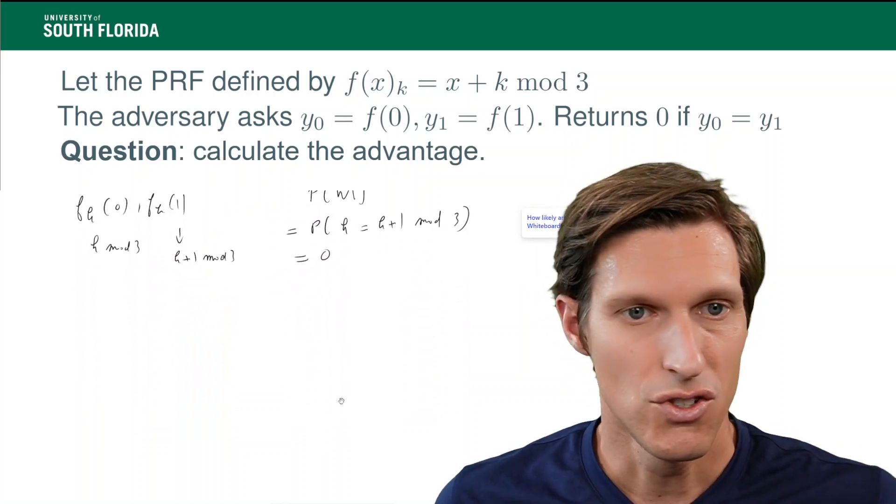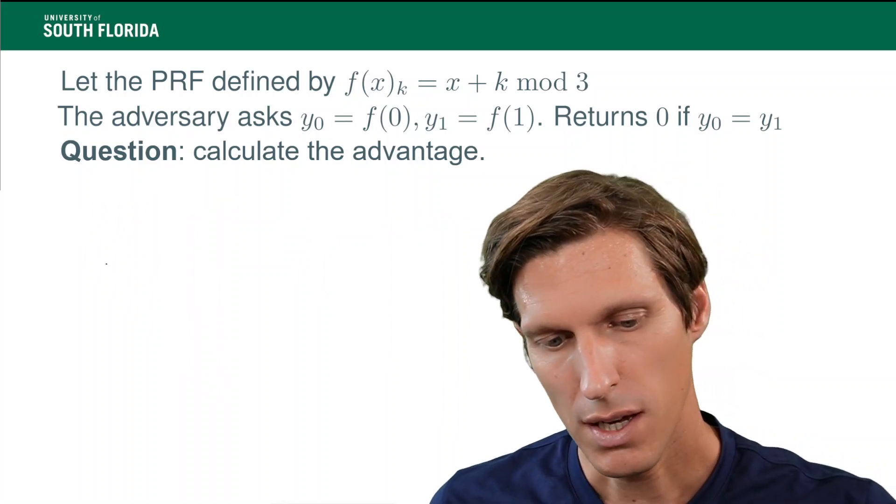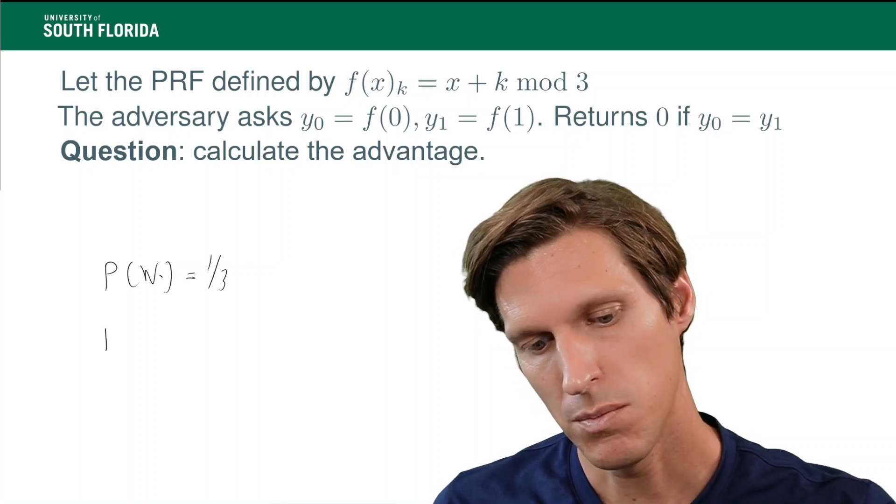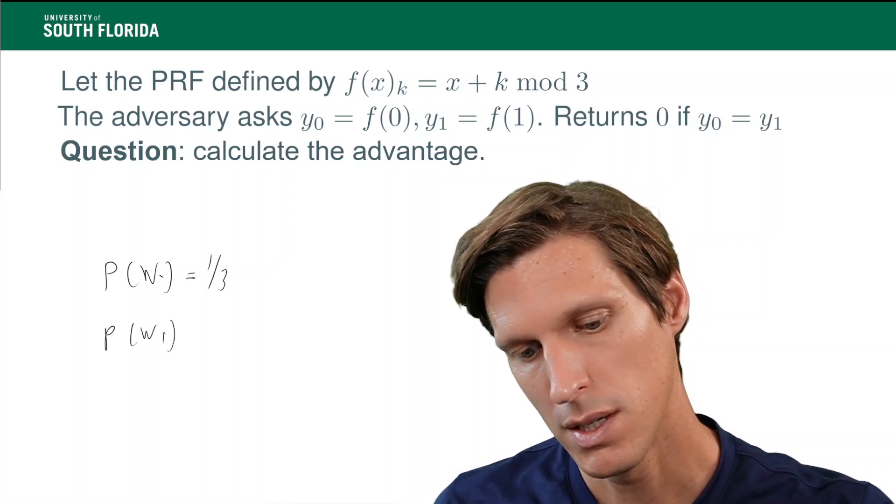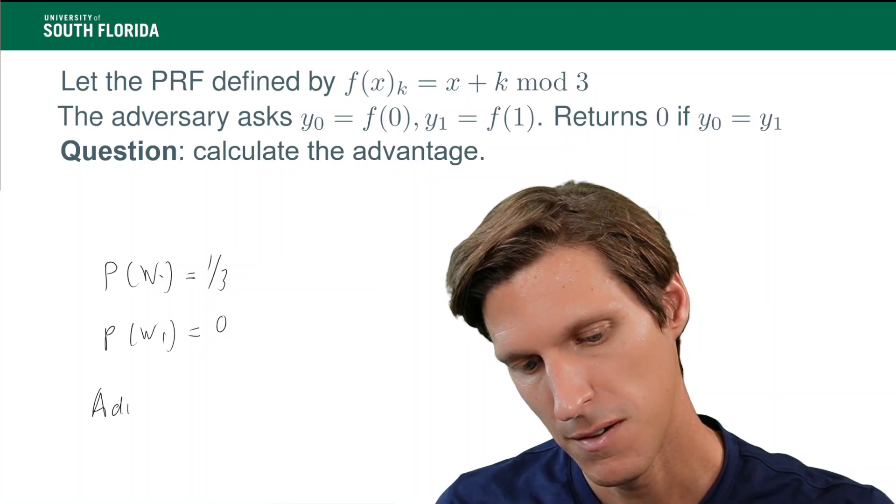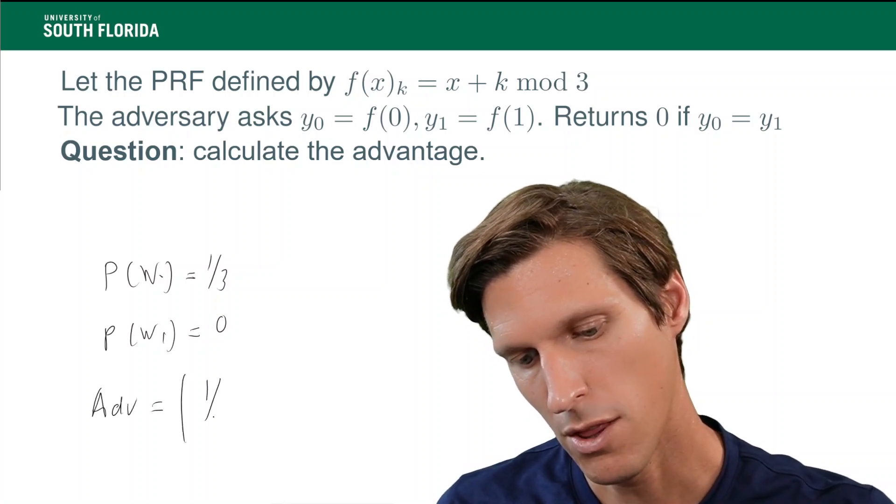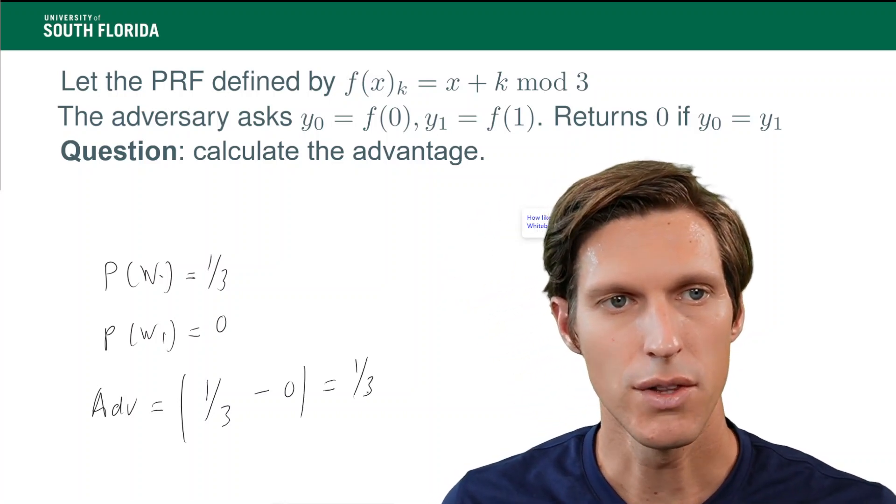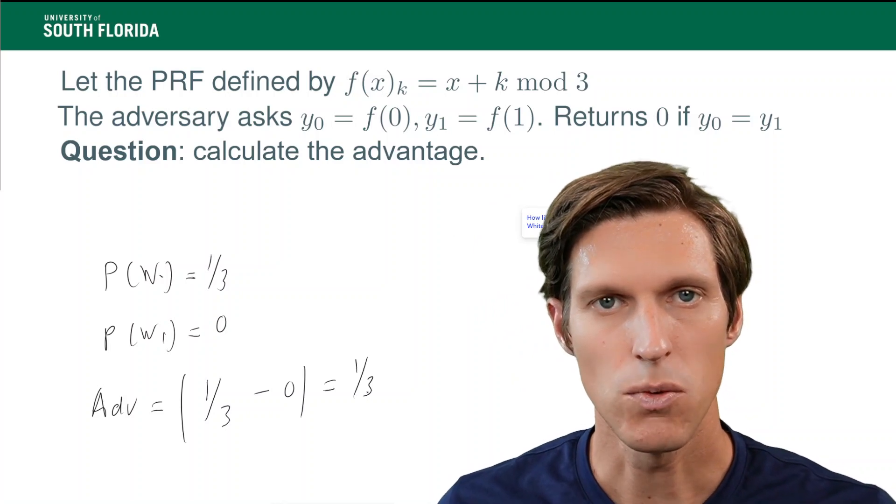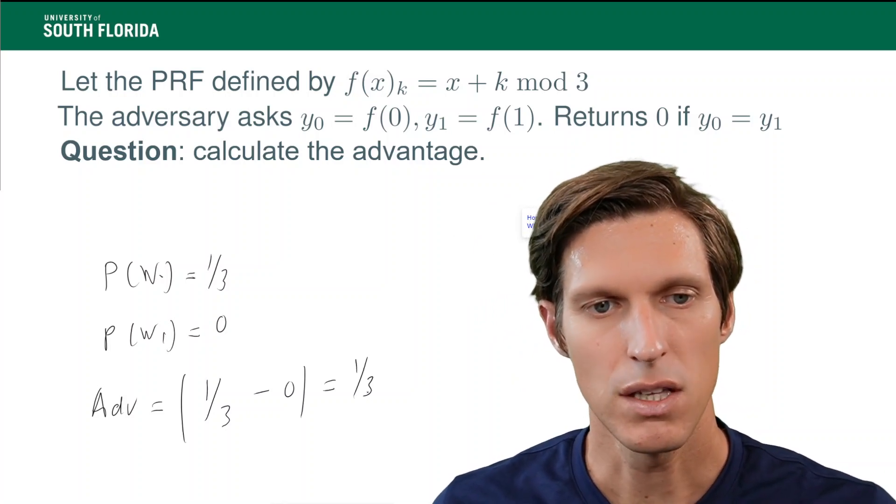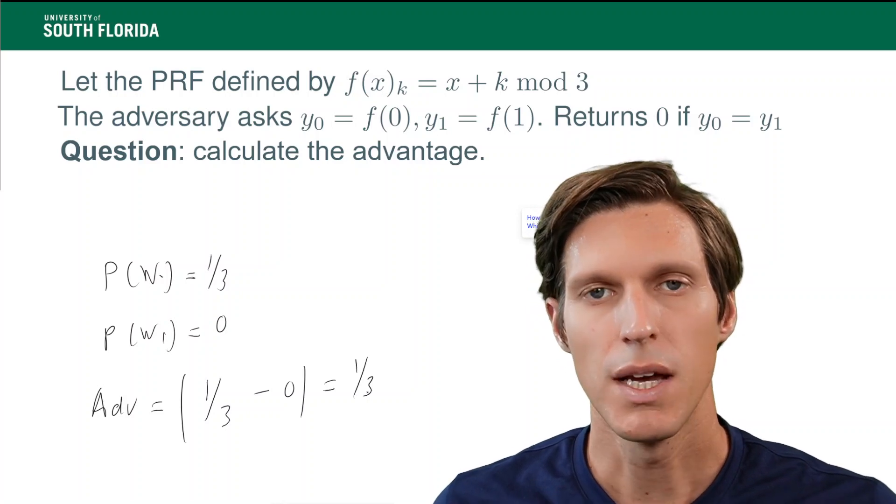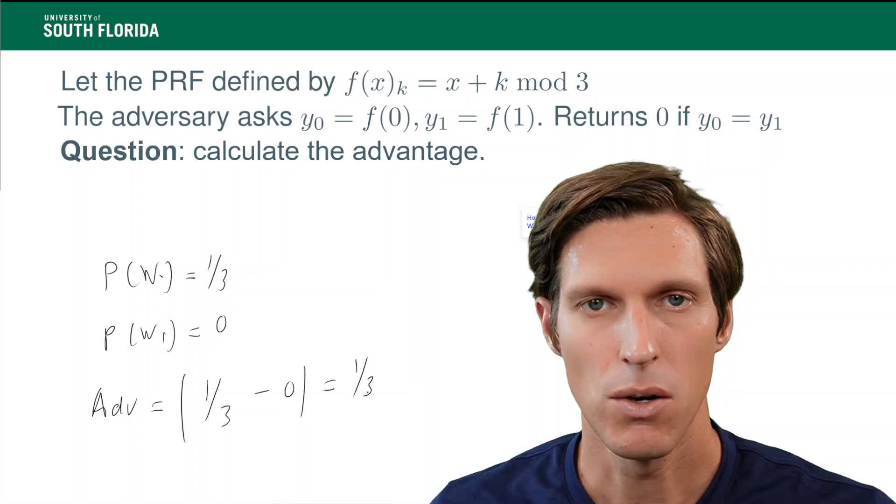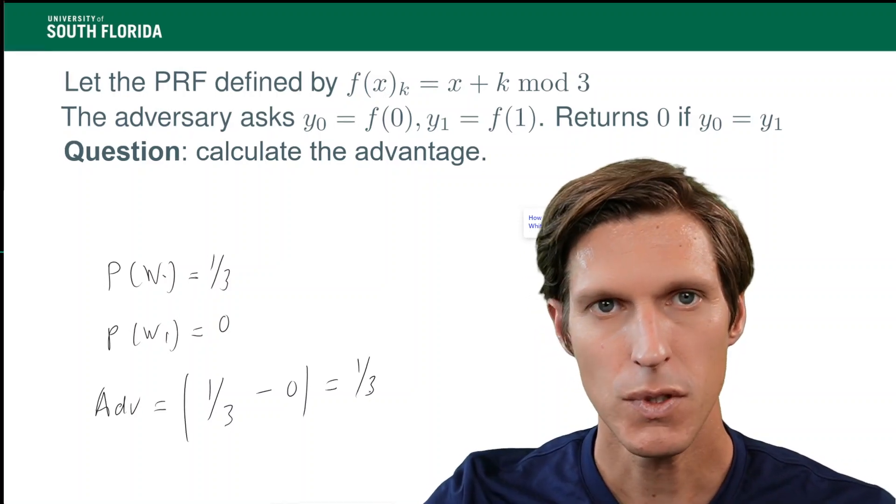So, and then we just engineer the pseudorandom function that way. So, now we have that p of w0 equals 1 third, and p of w1 is 0. The advantage is 1 third minus 0, which is 1 third. And this is a non-negligible advantage. So, we have an efficient adversary that has non-negligible advantage, which means that the pseudorandom function that I described is not really a secure pseudorandom function.